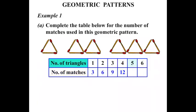When there are five triangles, the number of matches, going up by three again, would be fifteen. And if there were six triangles, the number of matches required, going up by three again, would be eighteen.